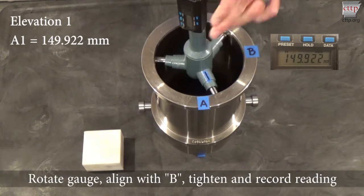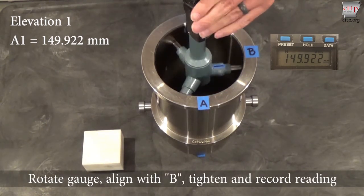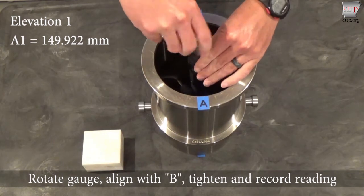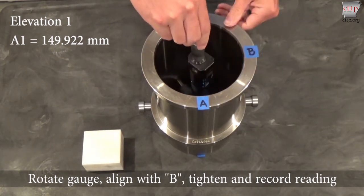Rotate the bore gauge and align the arm with position B. Tighten the bore gauge, record the reading, and then loosen the bore gauge.